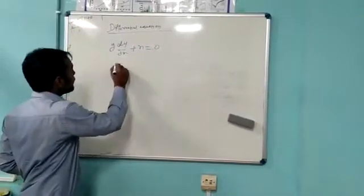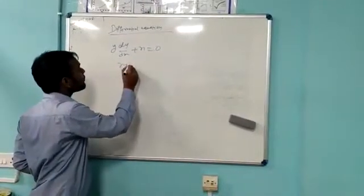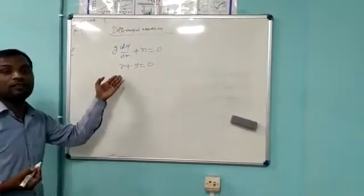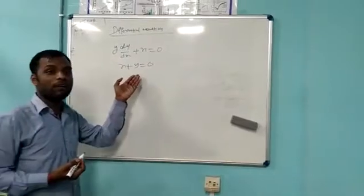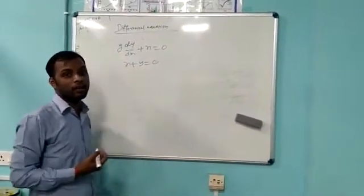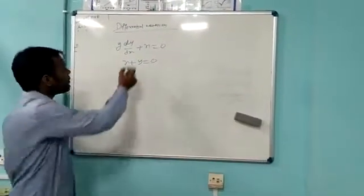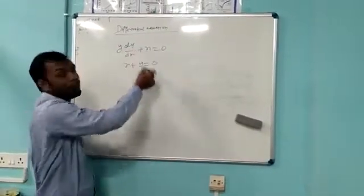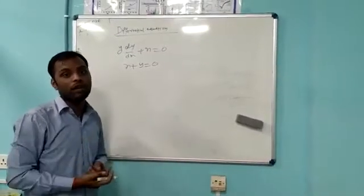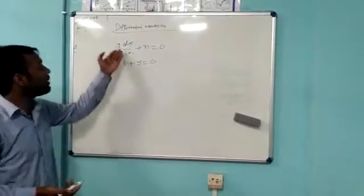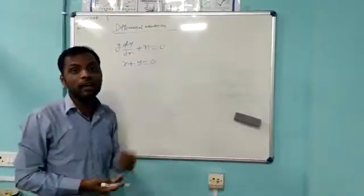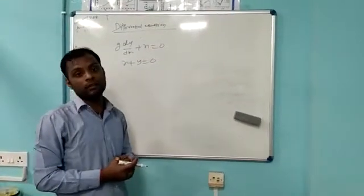Suppose we have the equation x plus y equal to 0. This equation is formed with the dependent variable and independent variable, and also includes some differentiation or derivative terms. That is why this mathematical equation is called a differential equation.